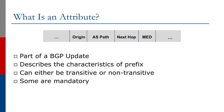So attributes would be things like the origin, the autonomous system path, next hop, metric, community, and so forth — just listing some of these attributes.